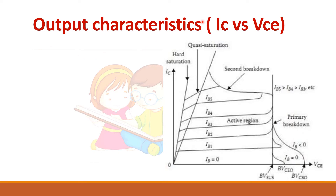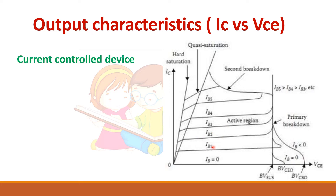Next are the output characteristics, drawn between output parameters — collector current versus collector-emitter voltage — for different base currents: IB = 0, IB1, IB2, IB3. This indicates that the BJT is a current control device, meaning the input current is controlling the output current.